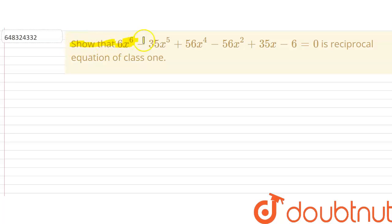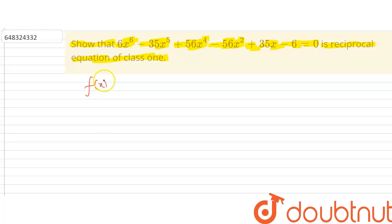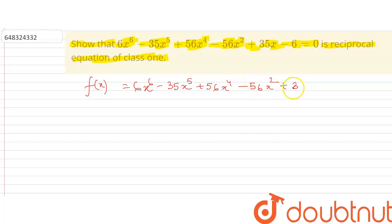We need to show that 6x⁶ minus 35x⁵ plus 56x⁴ minus 56x² plus 35x minus 6 equals 0 is a reciprocal equation of plus 1. Here it is given that f(x) equals 6x⁶ minus 35x⁵ plus 56x⁴ minus 56x² plus 35x minus 6. So we have to find the reciprocal equation.